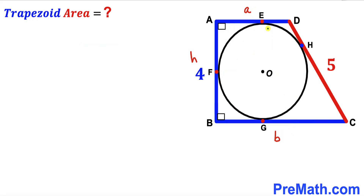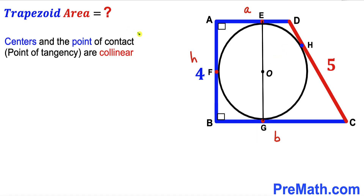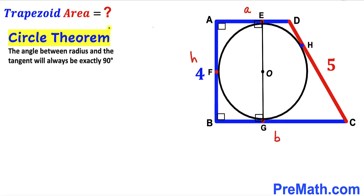In the next step, I'm going to connect point of tangency E and point G. Now let's recall this crucial fact: the center and the points of tangency are collinear. So point E, center O, and point G all lie on the very same line. Recall the circle theorem: the angle between the radius and the tangent line is always exactly 90 degrees.